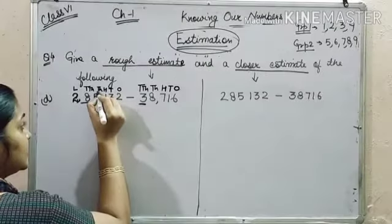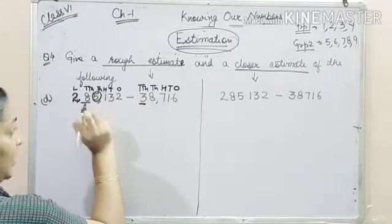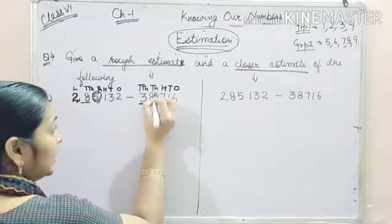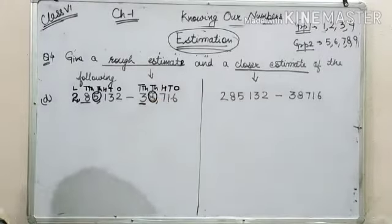This place is to be checked. Which place is this? Thousand. We have to check thousand place in both the cases.